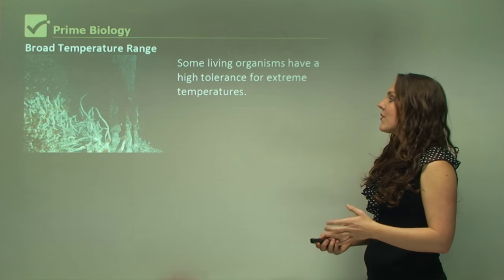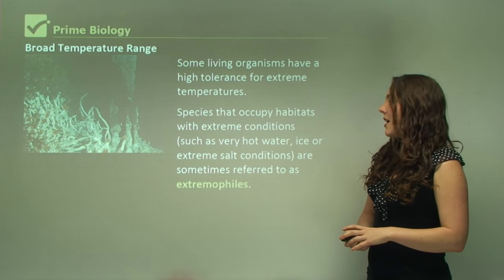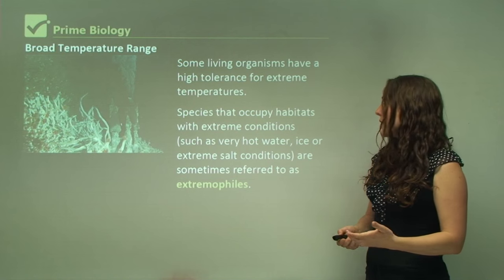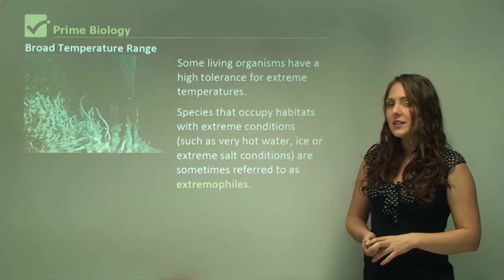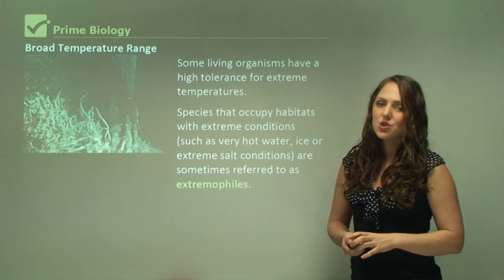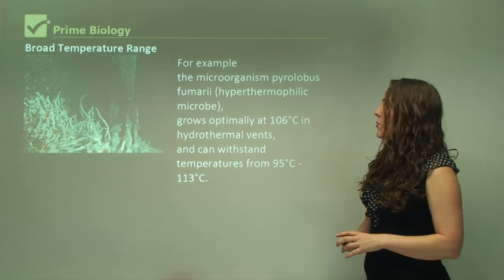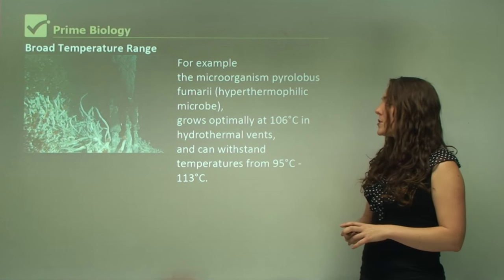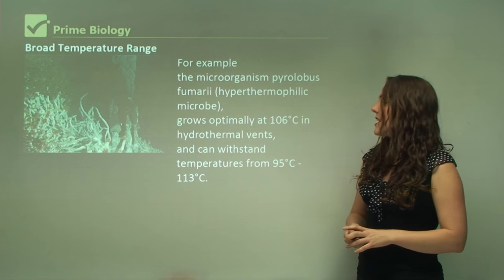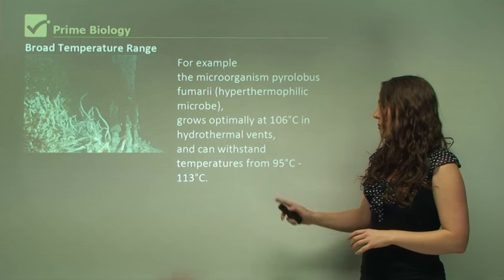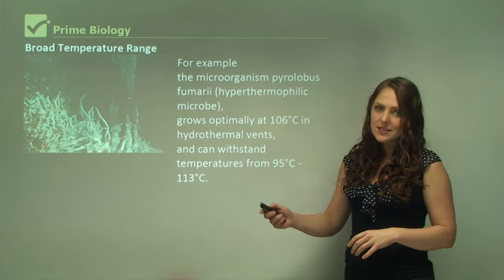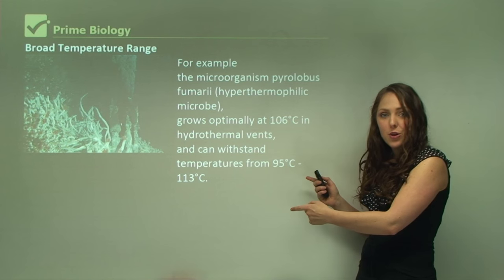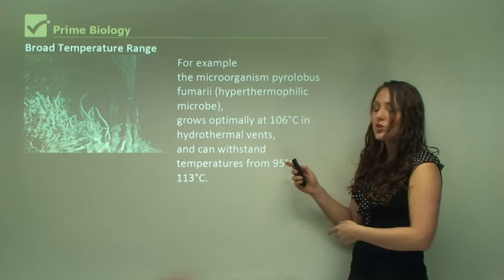Some living organisms have a high tolerance for extreme temperatures. Species that occupy habitats with extreme conditions such as really hot water, ice, or extreme salt conditions are sometimes referred to as extremophiles. For example, the microorganism Paralobus fumari is a hyperthermophilic microbe that grows optimally at 106°C in hydrothermal vents and can withstand temperatures from 95°C to 113°C. Even though it lives at an extreme temperature, its tolerance range is still narrow — only 95°C to 113°C.